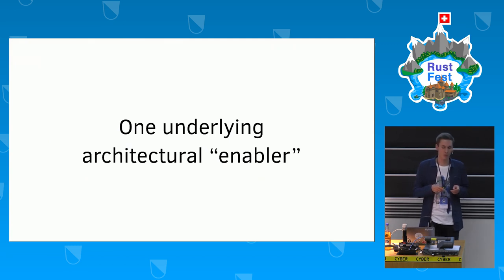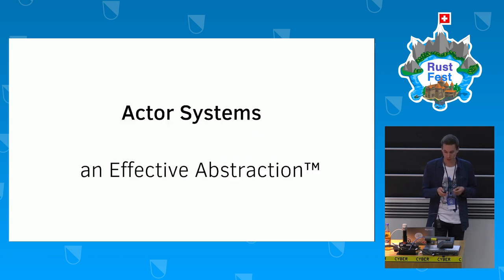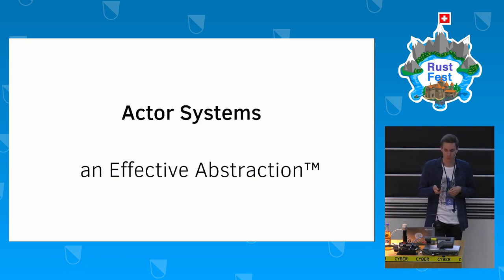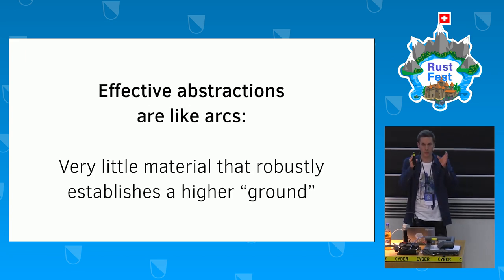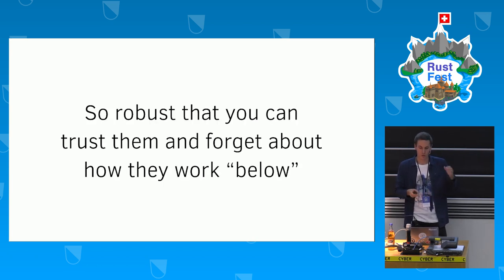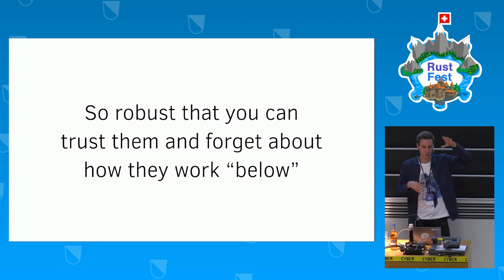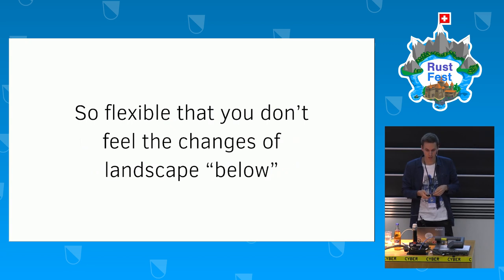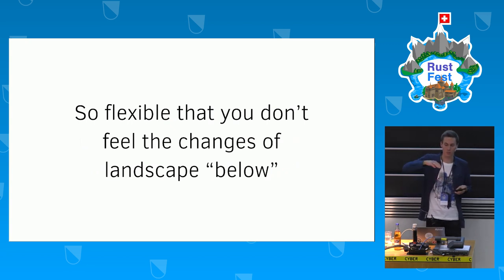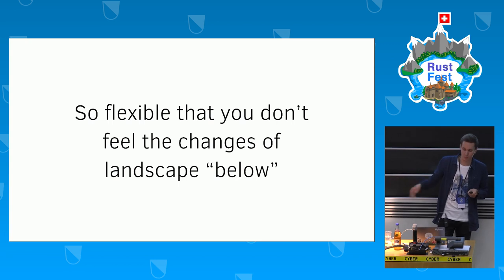I want to talk about what I feel is the one underlying architectural enabler: actor systems — what I'd call an effective abstraction. For me, effective abstractions are like arches: they need very little material but let you robustly establish higher ground — so robust you can stand on top and completely forget how everything below works.